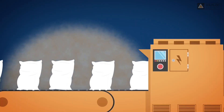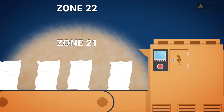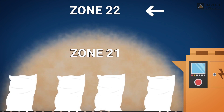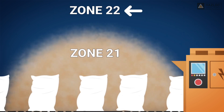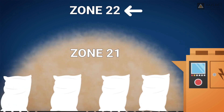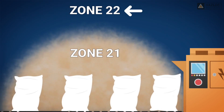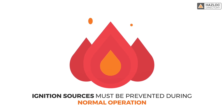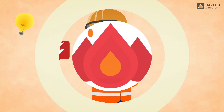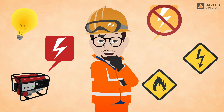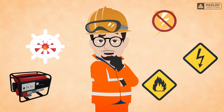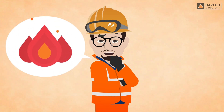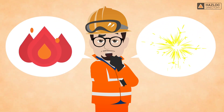Zone 22 is defined as an area in which an explosive dust atmosphere, in the form of a cloud of dust in the air, is not likely to occur in normal operation, but if it does occur, will persist for a short period only. Ignition sources must be prevented during normal operation. Electrical and non-electrical equipment used in Zone 22 must not become a source of ignition in the form of hot surfaces or sparks.